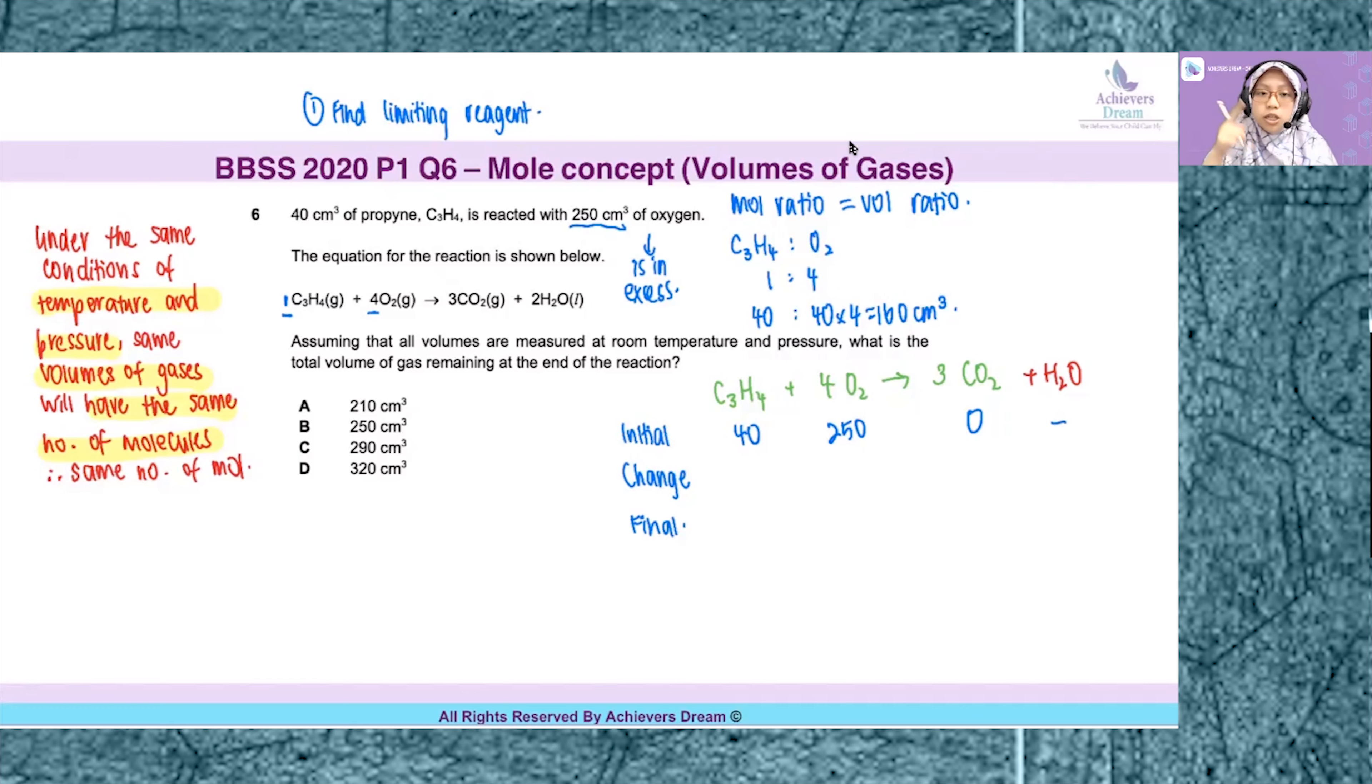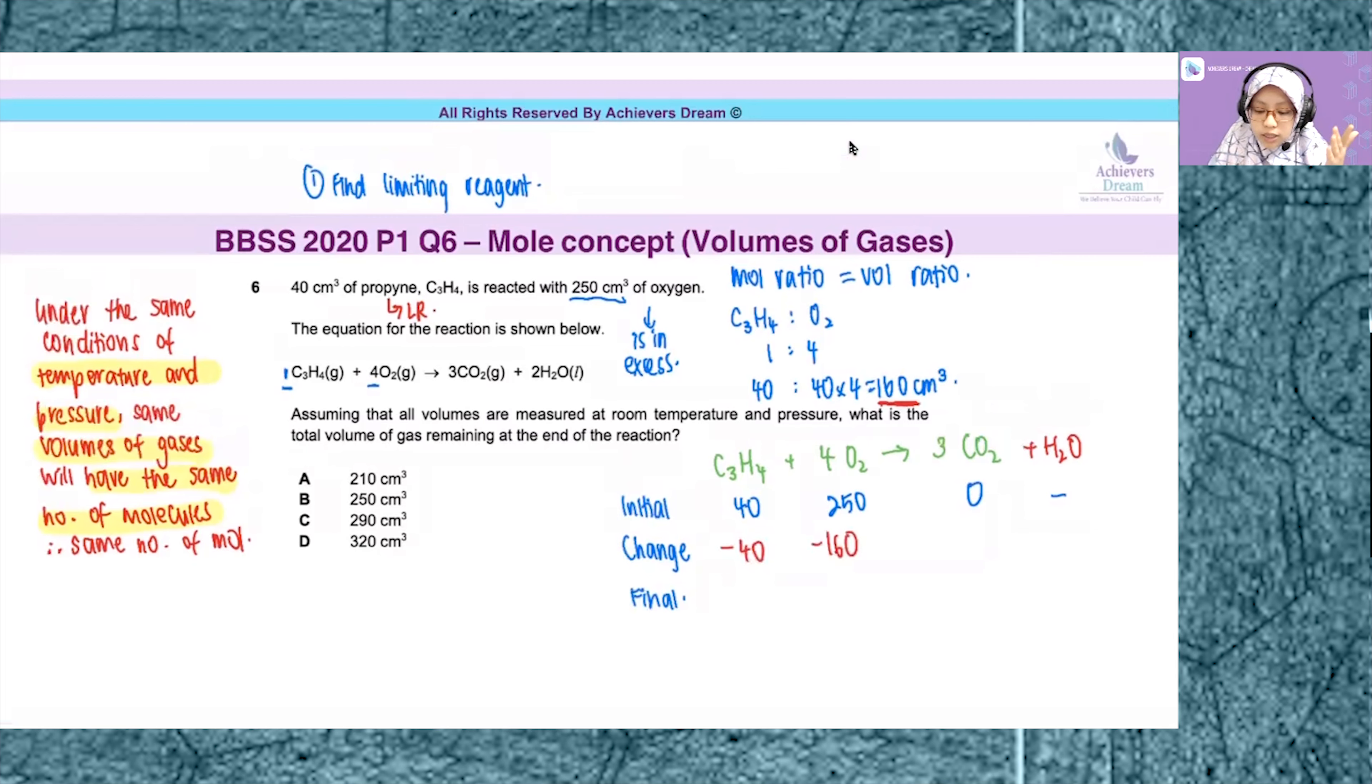Now the change. Remember the change is based on the limiting reagent. Since propyne is my limiting reagent, all of propyne will get consumed, minus 40. For oxygen, we have already calculated that only 160 cm³ of oxygen is needed for the reaction.